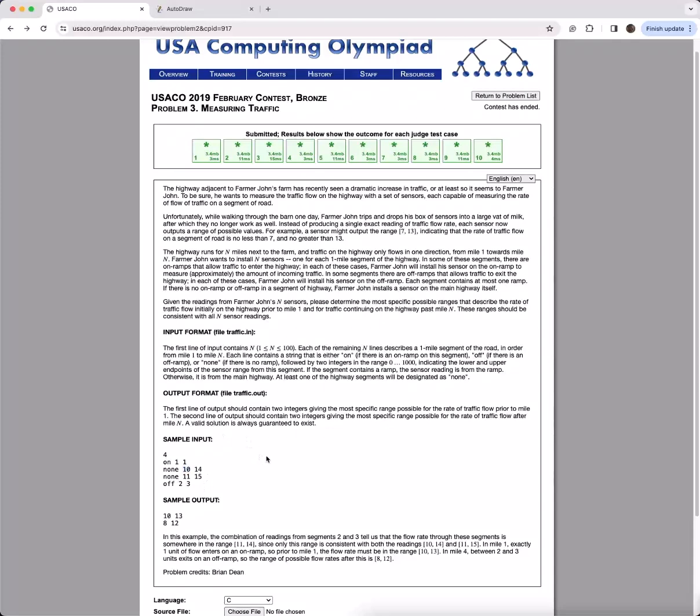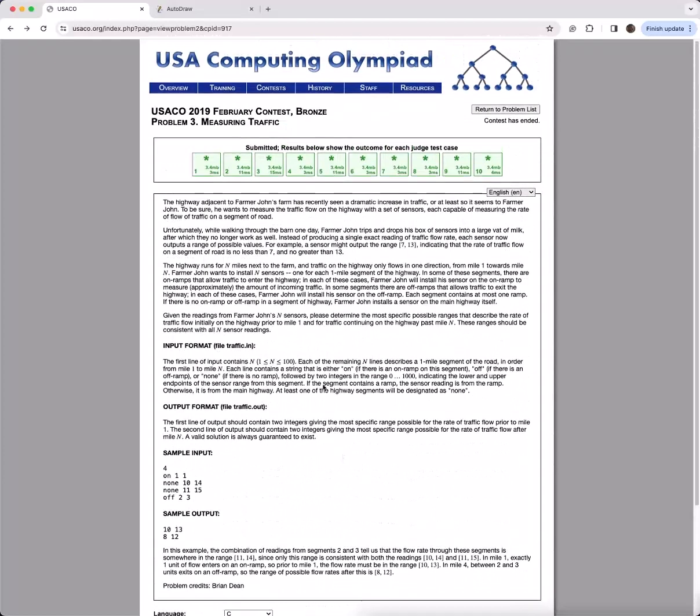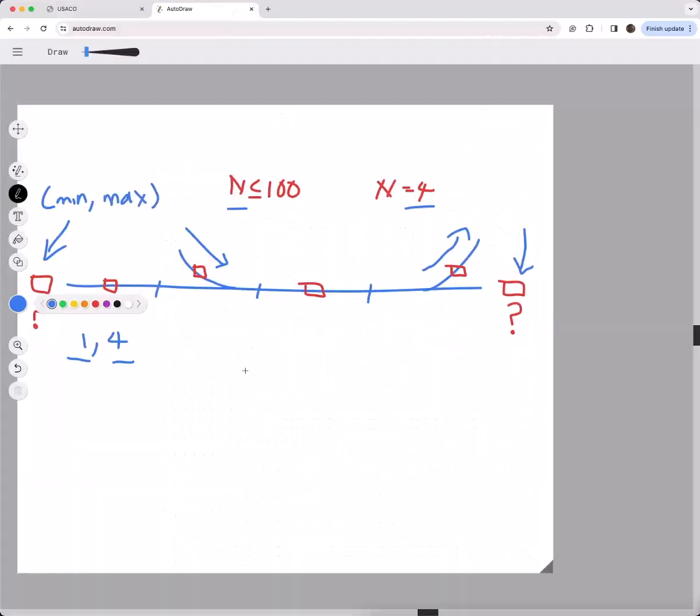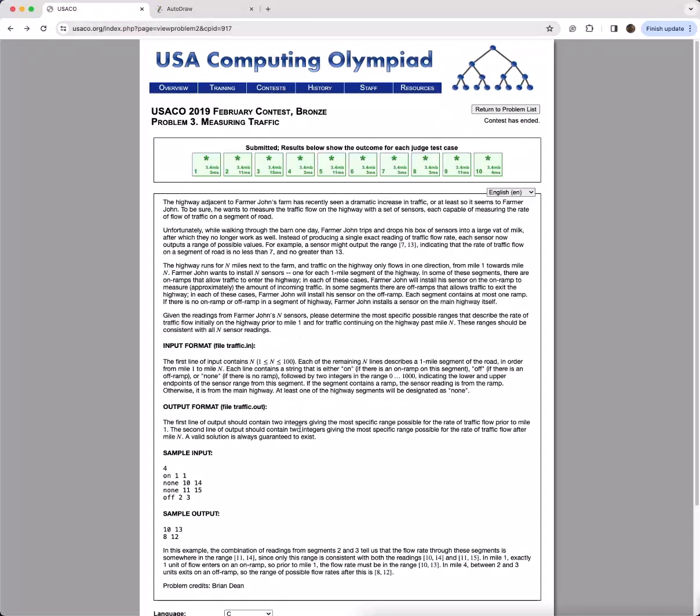That's basically the whole problem. As a hint, let's make a fundamental observation. Since we're trying to find two things in this problem—the amount of traffic flow before and the amount of traffic flow after—we want to split the problem into two parts.